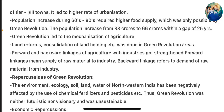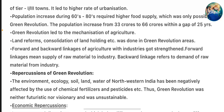Population increased during the 1960s and 1980s required higher food supply which was only possible by Green Revolution. The population increased from 33 crores to 66 crores within a gap of 25 years. Green Revolution led to the mechanization of agriculture, land reform, and consolidation of landholding. Forward and backward linkages of agriculture with industries got strengthened. Forward linkages mean supply of raw material to industry; backward linkage refers to demand of raw material from industry.